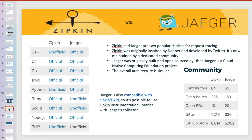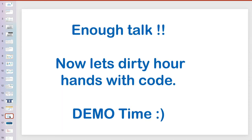There are two dominant and famous distributed tracing tools: Zipkin and Jaeger. Jaeger was developed by Uber and Zipkin was developed by Twitter. Both support multiple languages and both have very active communities, so there is not much difference between them. But this is not our main topic, so let us move into the demo — enough talk, let us get our hands dirty with code.